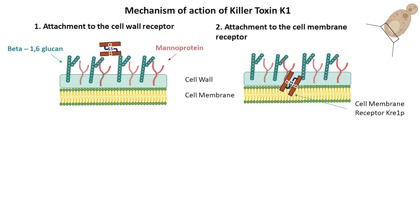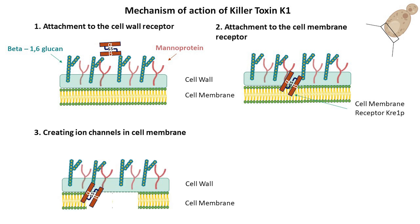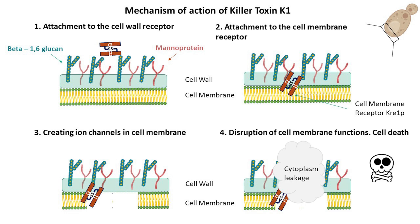In the second step, toxins move to the cell's inner membrane and interact with a secondary receptor, Kre1p, which is a yeast cell surface protein anchored to the plasma membrane. Once at the plasma membrane, toxin K1 creates ion channels that allow specific ions to pass through, which leads to the disruption of membrane function and cell death.